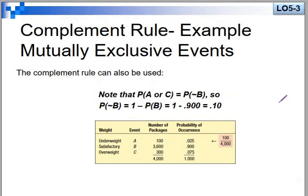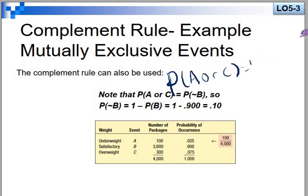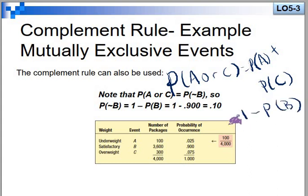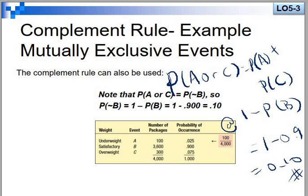Using the complement rule for mutually exclusive events: P(A or C) equals 1 minus P(B). Since P(B) = 0.9, we get 1 − 0.9 = 0.1, which is the same result as P(A) + P(C).